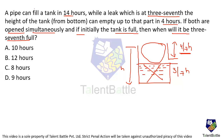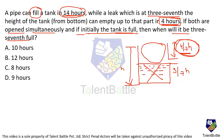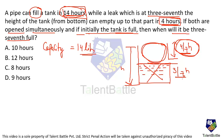The filling pipe fills the tank in 14 hours. To simplify, assume the tank capacity is 14 liters. Then the filling pipe's efficiency is 1 liter per hour. The leak empties only 4/7 of 14 liters, which is 8 liters, in 4 hours — giving a leak efficiency of 2 liters per hour.